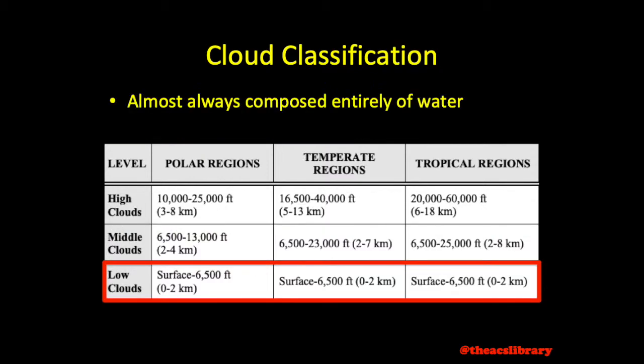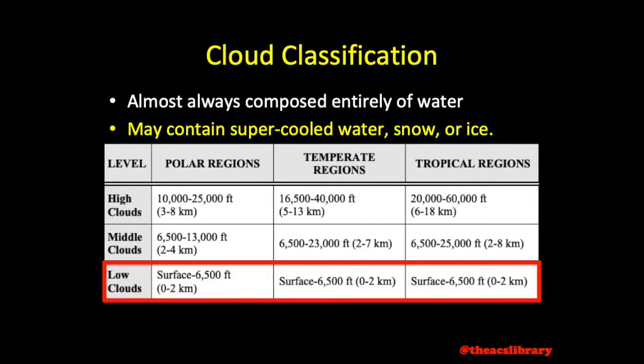The low-level clouds are almost always composed entirely of water, which at times may be supercooled. If they lie below the freezing level, they may contain snow or ice particles. These clouds' bases range from the surface to 6,500 feet at all latitudes.